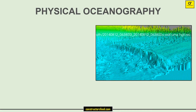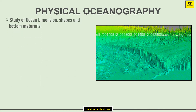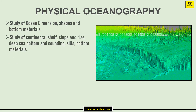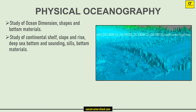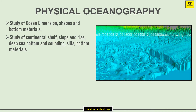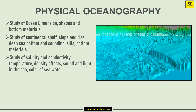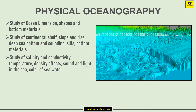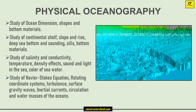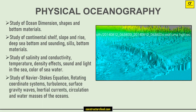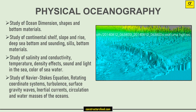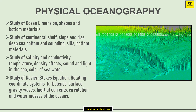Physical Oceanography: study of ocean dimensions, shapes, and bottom materials, continental shelf, slope and rise, deep sea bottom, soundings, sills, and bottom materials. Study of salinity, conductivity, temperature, density effects, sound and light in the sea, and color of sea water. Study of Navier-Stokes equations, rotating coordinate systems, turbulence, surface gravity waves, inertial currents, and water masses of the oceans.